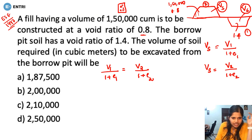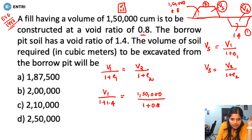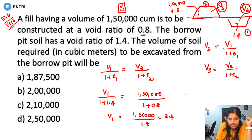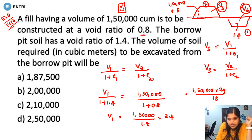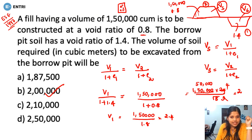So V1 divided by (1 plus 1.4) equals V2 = 1,50,000 divided by (1 plus 0.8). Therefore V1 equals 1,50,000 divided by 1.8, multiplied by 2.4. We get the answer as 2,00,000 cubic meters. The correct answer is Option B: 2 lakh cubic meters.